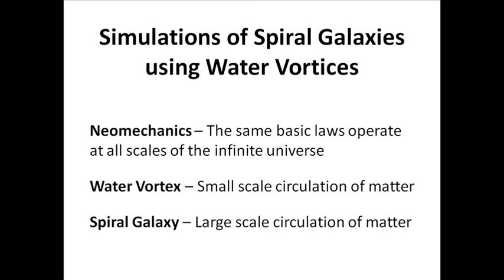This video shows various types of water vortices that simulate spiral galaxies. According to the Universal Cycle Theory, the same neomechanical laws operate at all scales of the infinite hierarchy. Consequently, it is possible to simulate different types of spiral galaxies with slight variations in the parameters of some simple water vortex experiments.